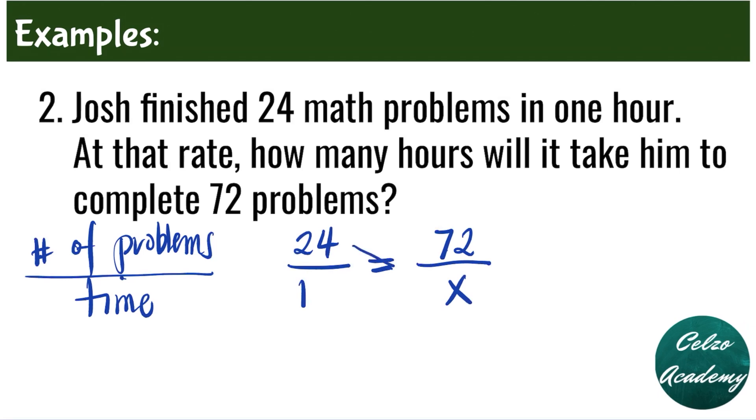By cross products, 24 times x is 24x. 72 times 1 is 72. So now we have 24x equals 72.